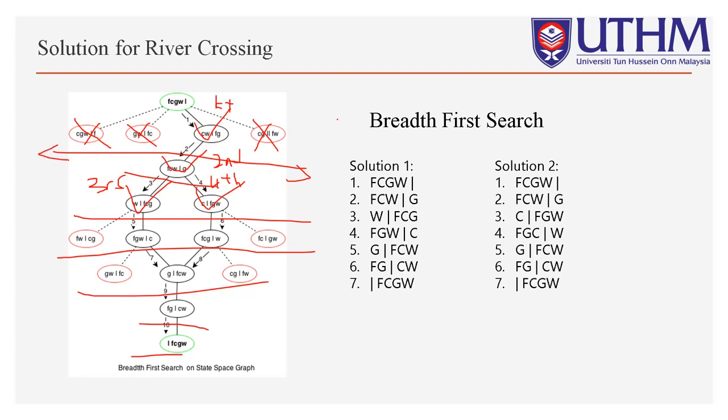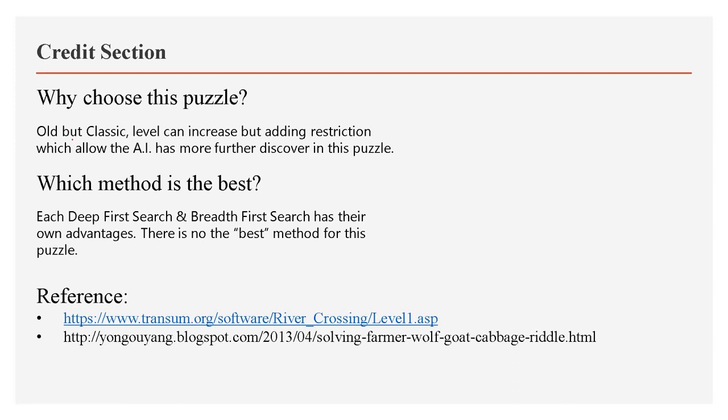To summarize: depth-first search goes down, while this is the method for breadth-first search. For the question: why do I choose this puzzle? Because this puzzle is old but classic. The level can be increased by adding restrictions, which allows the AI to discover more in this puzzle. Which method is the best for this puzzle? Actually, there is no single best method. Depth-first search will find the first answer correctly, but breadth-first search will find all the answers at the same time. For my references, I will attach them in the description. Thank you for watching my video.